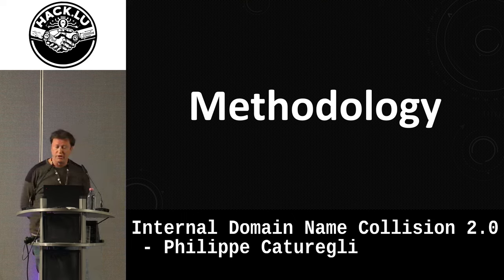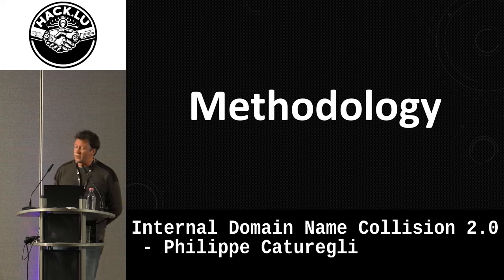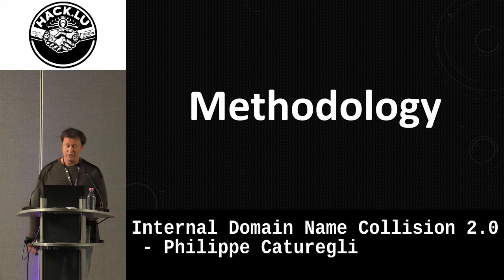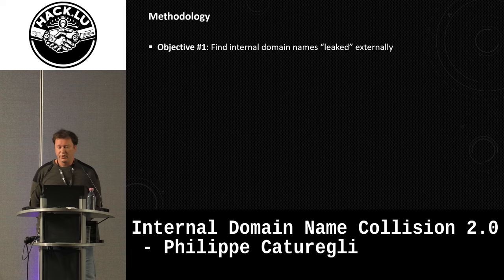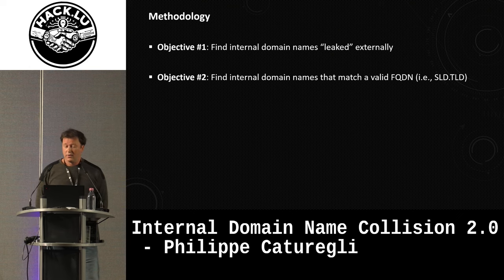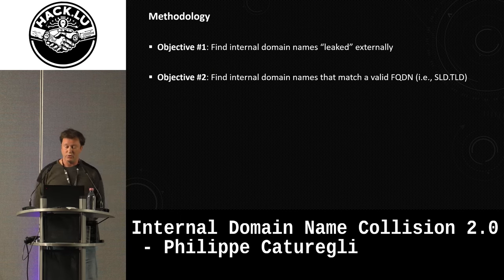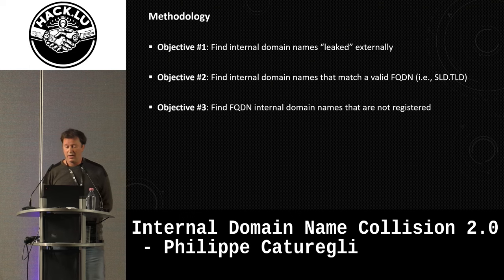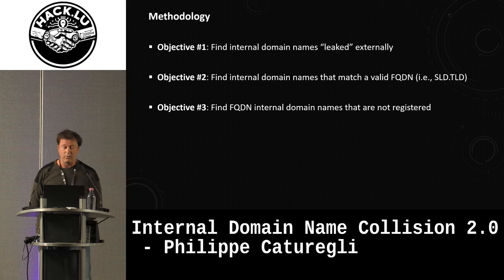So let's focus on the methodology. We wanted to find how widespread the issue was that we found during our red team engagement. Name collision is not new — it's been discussed since the early 2010s. There were three main objectives: one, find internal domains leaked externally; two, match those that became valid fully qualified domain names since 2013 when the new GTLDs were introduced; and three, check whether those domains were registered or not.